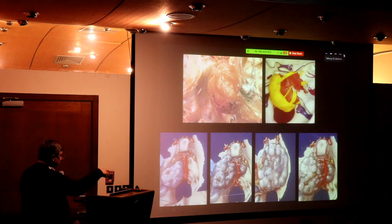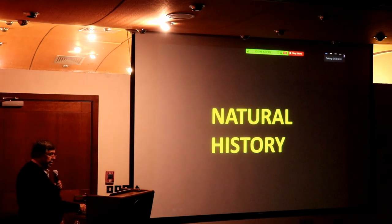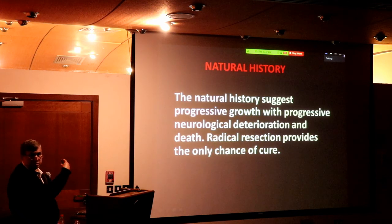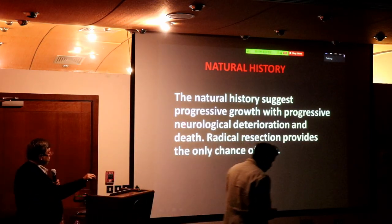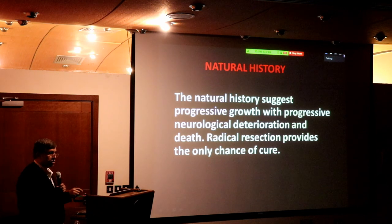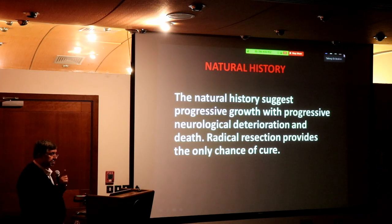This is the image people should have in mind — a petroclival meningioma in the clivus and its relationship with the brainstem and the nerves. What's the natural history of these meningiomas? The natural history suggests they progressively grow with progressive neurological deterioration and death. Surgery is the only treatment that gives a chance of cure.